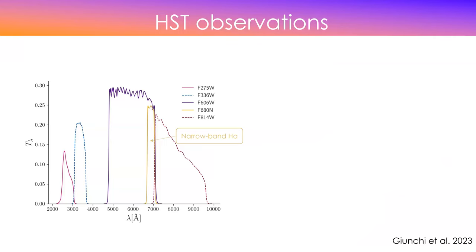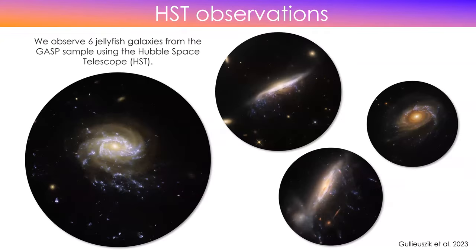We decided to observe some of these galaxies — six in total, though I'm just showing my four favorites. We observed these six objects with the Hubble Space Telescope. With Hubble, we can see very tiny structures that in MUSE were all smushed together. We can really resolve these star-forming clumps and also provide very cool desktop backgrounds. These don't look like typical jellyfish galaxies at this resolution because when you have better resolution you see very tiny things, and it's a somewhat click-baity name.